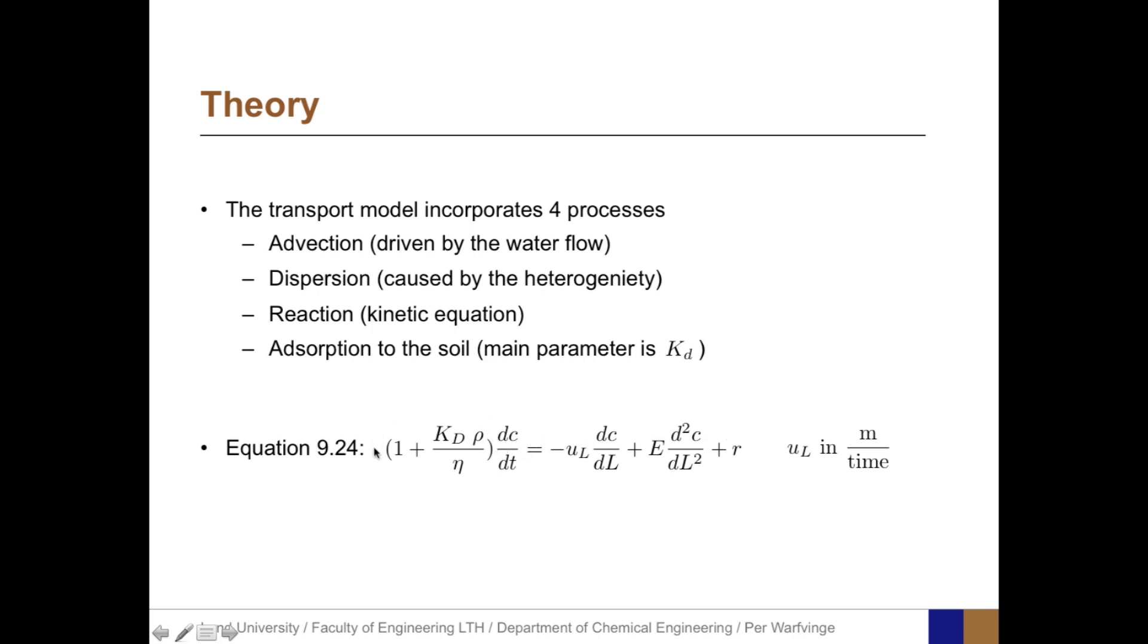On the left-hand side, we have the retardation factor, which describes the sorption to the soil. And the three parameters that are needed is Kd, which is the distribution coefficient, rho, which is the density of the soil, eta, which is the porosity of the soil.